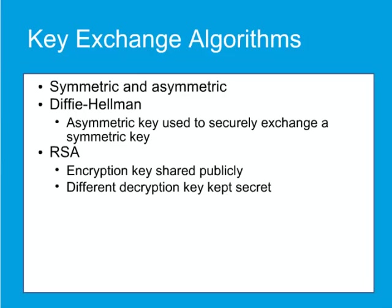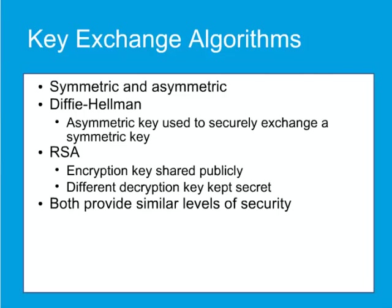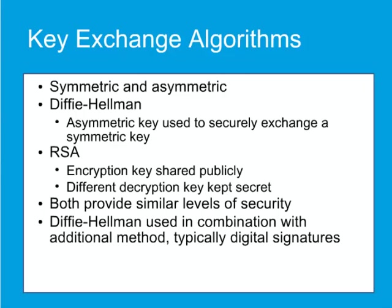RSA and Diffie-Hellman are both based on supposedly intractable problems — the difficulty of factoring large numbers and exponentiation and modular arithmetic, respectively — and with key lengths of 1024 bits give similar levels of security. Neither is significantly less secure than the other. The nature of the Diffie-Hellman key exchange does make it susceptible to man-in-the-middle attacks because it does not authenticate either party involved in the exchange. This is why Diffie-Hellman is used in combination with an additional authentication method, typically digital signatures. When using RSA, a 1024-bit key is considered suitable for generating digital signatures and key exchange, while a 2048-bit key is recommended when a digital signature must be kept secure for an extended period of time, such as a certificate authority's key. Most encryption systems offer a choice between RSA and Diffie-Hellman rather than combining them.